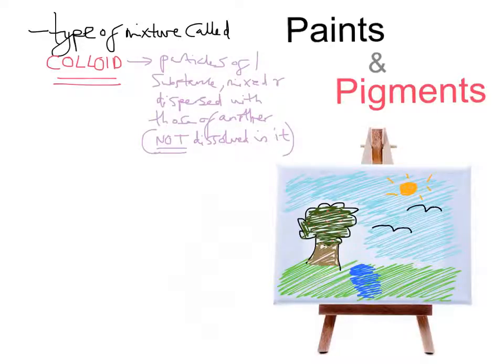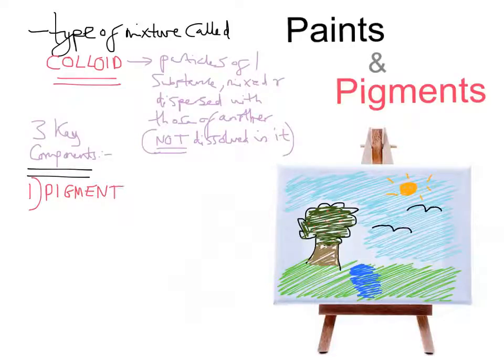I've referred to pigment, but let's think of the three components, three key components that make up this colloid. So I'll put here three key components. Let's list the three key components that we've got in our colloid. The first one, as I said, was the pigment. The pigment is the thing that gives the paint its characteristic color. And we've got different types of pigment. I'm going to come on to that shortly. The second most important thing we need in this colloid is what's called a binding medium. So we'll just put that in. Binding medium.